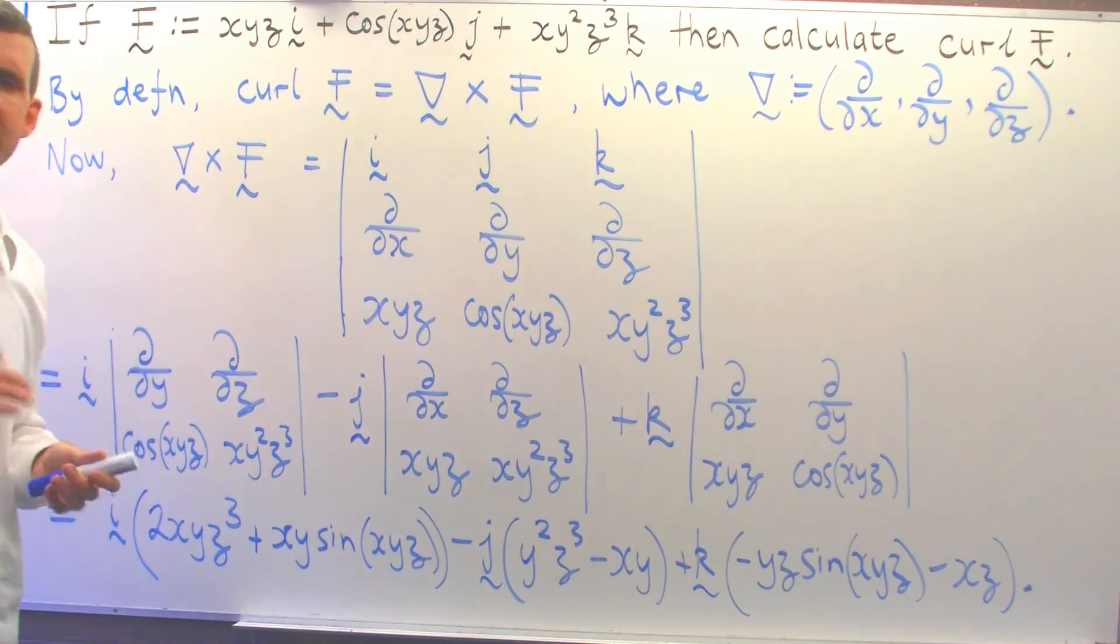So what does that signify? Well, if f was, say, the velocity field of a fluid, then there would be no rotation around the origin, so there would be no whirlpools at the origin because the curl is the 0 vector.